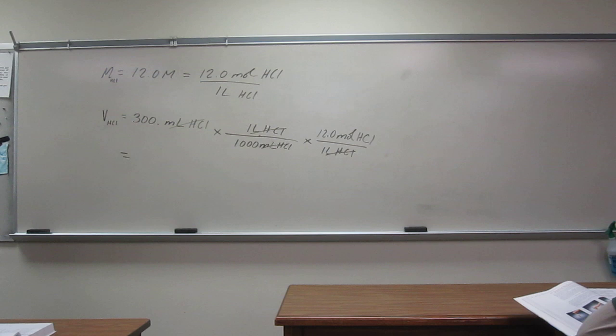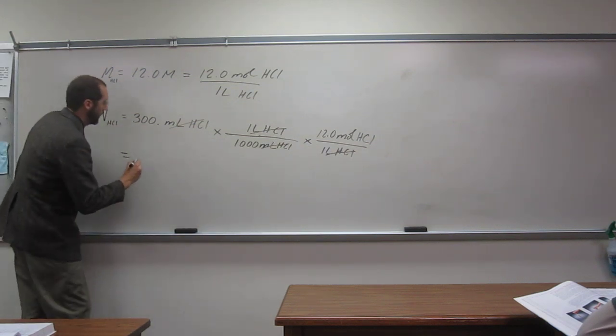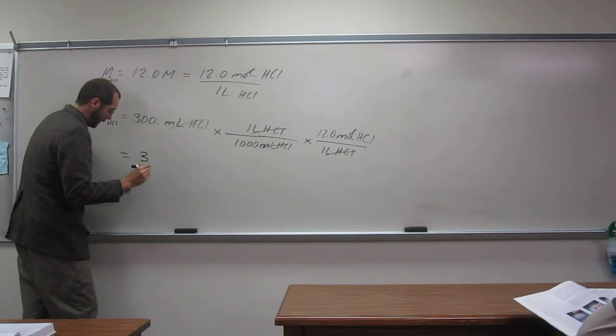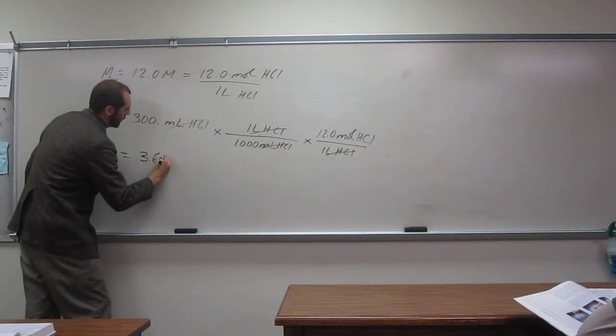So let's just do it. 300 divided by 1,000 times 12. Is that 3 sig figs? 3.60.